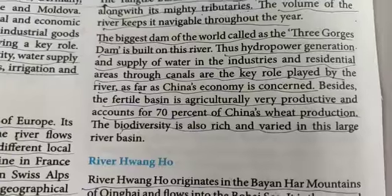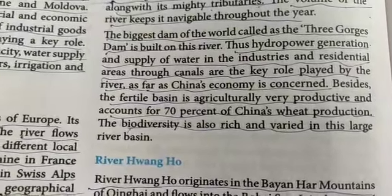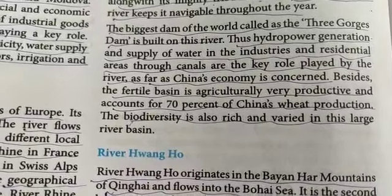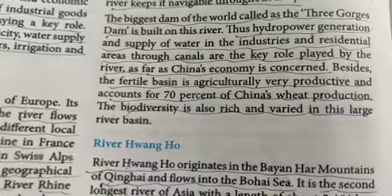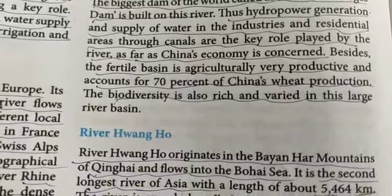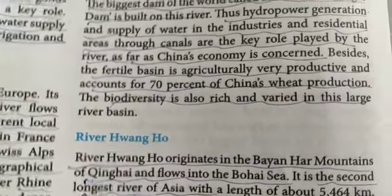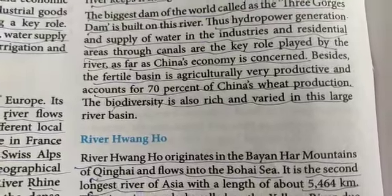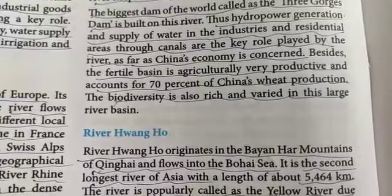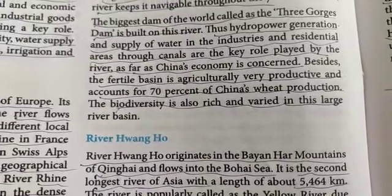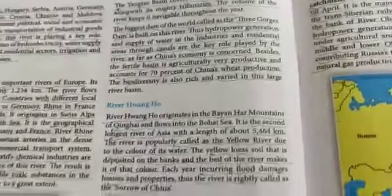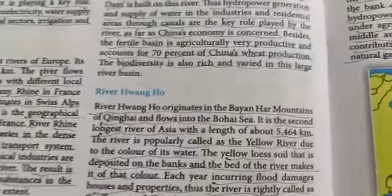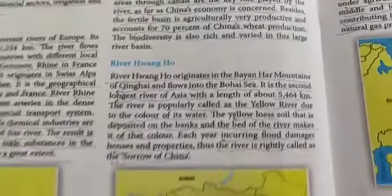The biggest dam in the world, called the Three Gorges Dam, is built on this river. Thus, hydro power generation and supply of water to industries and residential areas through canals are the key roles played by the river as far as China's economy is concerned. The fertile basin is agriculturally very productive and accounts for 70% of China's wheat production. The biodiversity is also rich and varied in this large river basin. River basins are agriculturally very fertile because of the rich alluvial soil and silt deposited there.